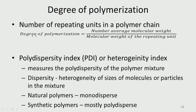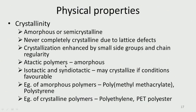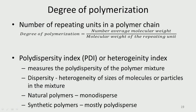The degree of polymerization is the number of repeating units: Mn divided by the molecular weight of the repeating unit. Polydispersity (Mw/Mn) measures the heterogeneity of sizes. Natural polymers are monodispersed; synthetic polymers are mostly polydispersed.